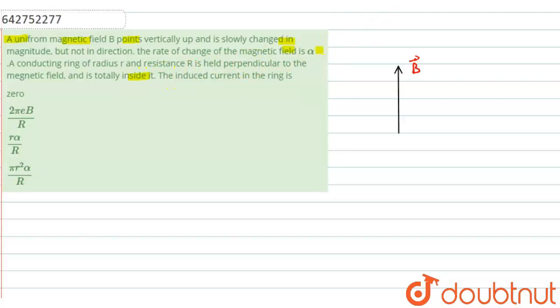That means there is a magnetic field, there is a circular ring like this, and the radius of this ring is given as small r. Now we have to find the value of current.